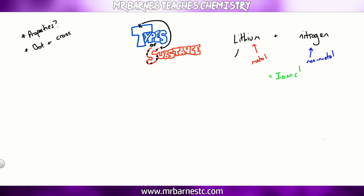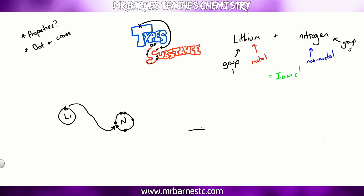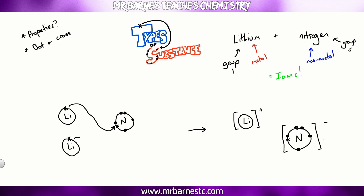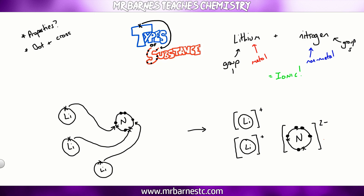For the dot and cross diagram, since it's a metal and a non-metal, we have a transfer of electrons. Lithium is in group one, nitrogen is in group five. Lithium wants to lose one electron, and nitrogen wants to gain three. I transfer one electron from lithium to nitrogen — lithium is now complete with none in the outer shell, but nitrogen only has six. I add another lithium, transfer that electron, giving nitrogen seven electrons. Then one more lithium transfers its electron, giving me three lithium ions and one nitride ion. The formula is Li₃N.